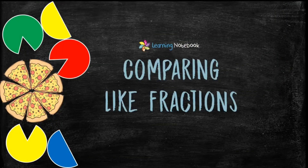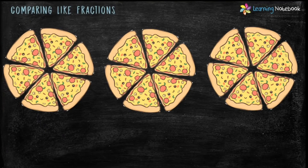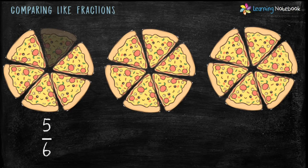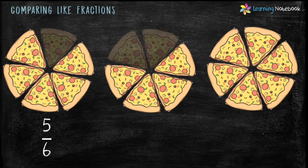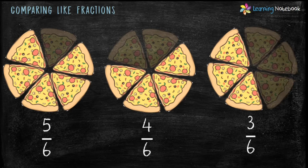Now let's understand how to compare like Fractions. Suppose 3 friends have ordered 3 Pizzas. Rahul eats 1 slice from his Pizza, so the Fraction of remaining Pizza is 5 by 6. Simran eats 2 slices from her Pizza, so the Fraction of remaining Pizza is 4 by 6. Tina eats 3 slices from her Pizza, so the Fraction of pizza left with her is 3 by 6. So we have got 3 like Fractions: 5 by 6, 4 by 6 and 3 by 6.